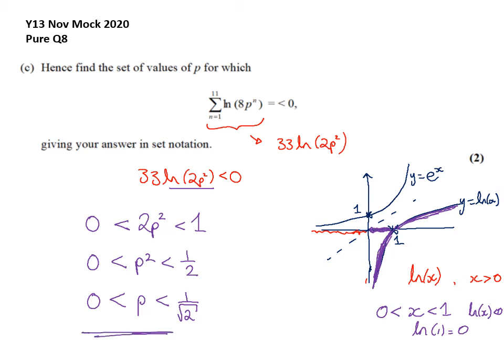So that's my range of values. It asks for the answers in set notation. Well, you can just put some curly brackets around P such that it satisfies that. And you could add on P belongs to real numbers.